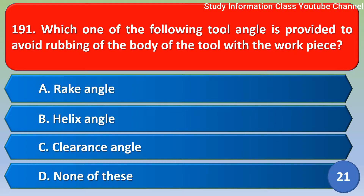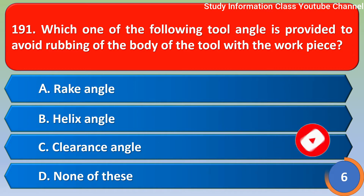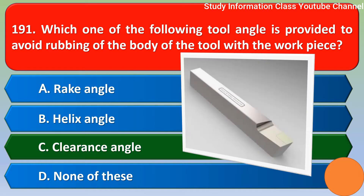Namaste. Which one of the following tool angles is provided to avoid rubbing of the body of the tool with the workpiece? The correct answer is Option C, clearance angle.